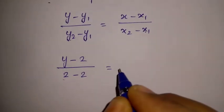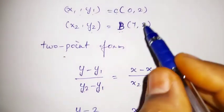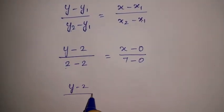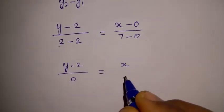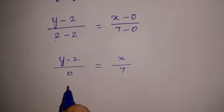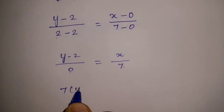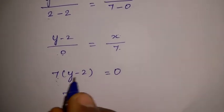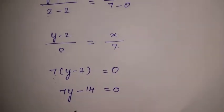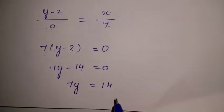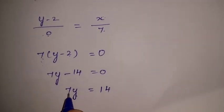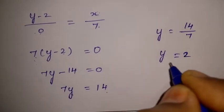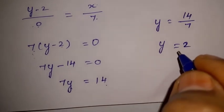Substituting: x1 = 0, x2 = 7, y1 = 2, y2 = 2. So (y - 2)/(2 - 2) = (x - 0)/(7 - 0), which gives 7(y - 2) = 0, so 7y - 14 = 0, therefore y = 14/7 = 2. The equation of East Avenue is y = 2.